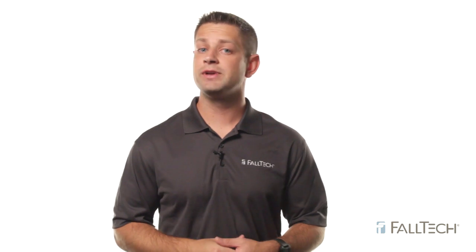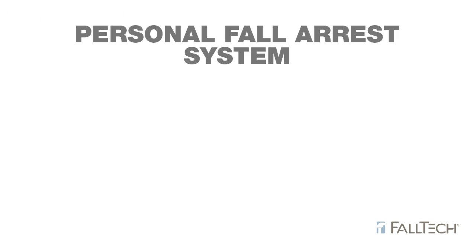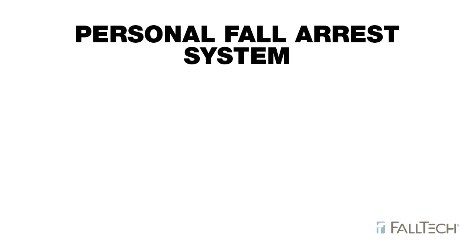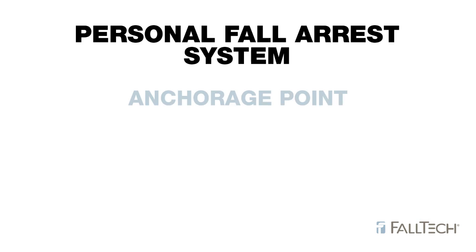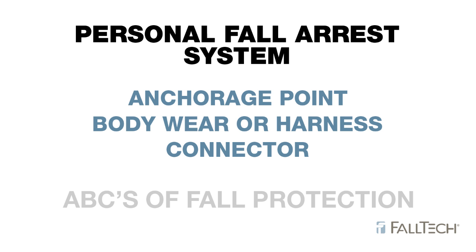When a hazard cannot be eliminated or a restraint system is not feasible, then a personal fall arrest system must be employed. A personal fall arrest system consists of an anchorage point, body wear or harness, and a connector. This is often referred to as the ABCs. Let's take a closer look at what makes a personal fall arrest system.